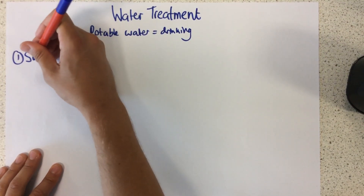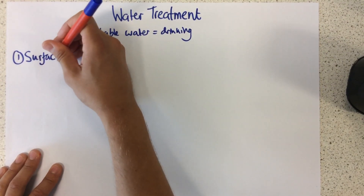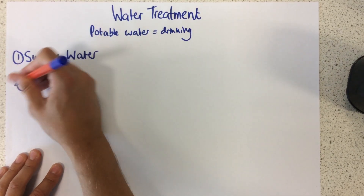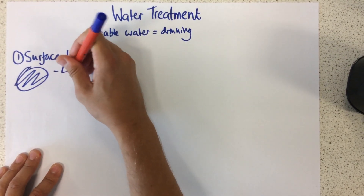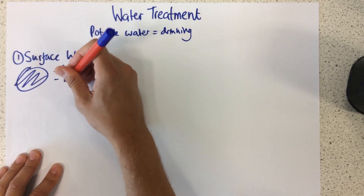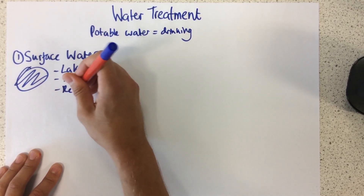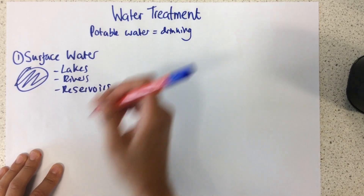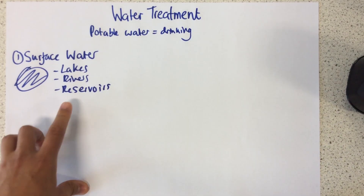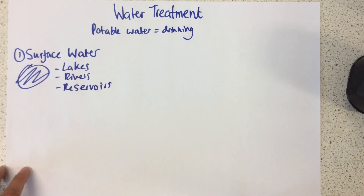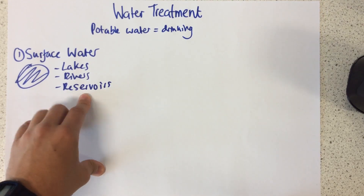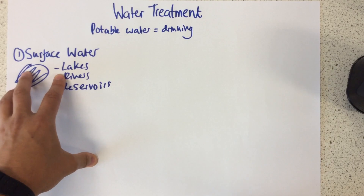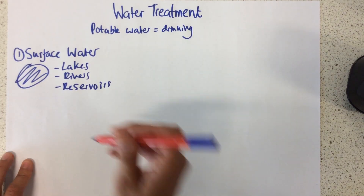Number one is surface water. All this means is water which is found or can be gathered from lakes, rivers and reservoirs. In the summer months in England and Wales in particular, some of this surface water can actually dry up and be scarce, so we need to have other places to get it as well.